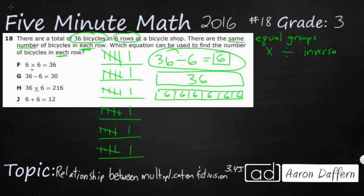And if we're looking at which equation can be used to find the number of bicycles in each row, well, there are 6 bicycles in each row. So I can't even look at my answer choices over here and see which one of these come up with 6. The closest one is 12 in J, but that doesn't seem quite right.